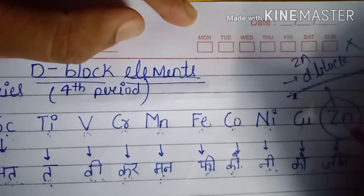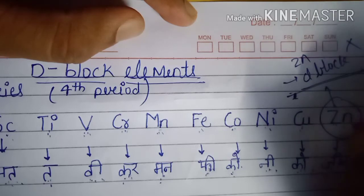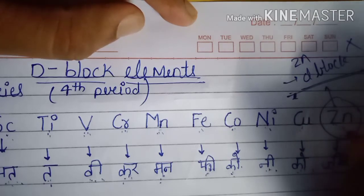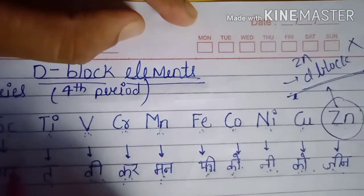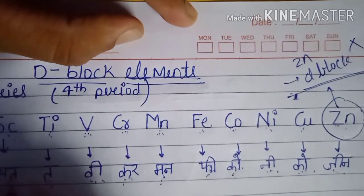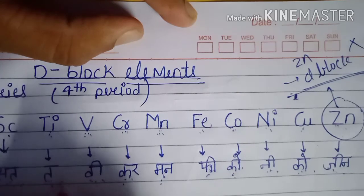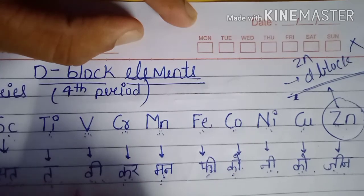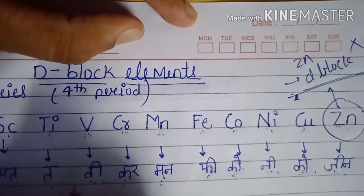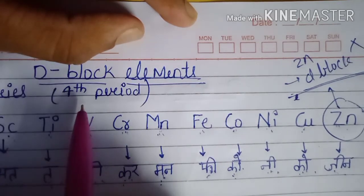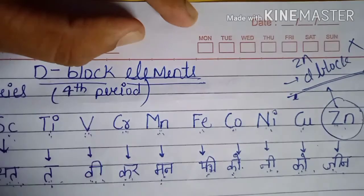So we don't include those. Now once again remember: Sc, Ti, V, Cr, Mn, Fe, Co, Ni, Cu, Zn. Now I will tell you the trick for the sixth period elements.